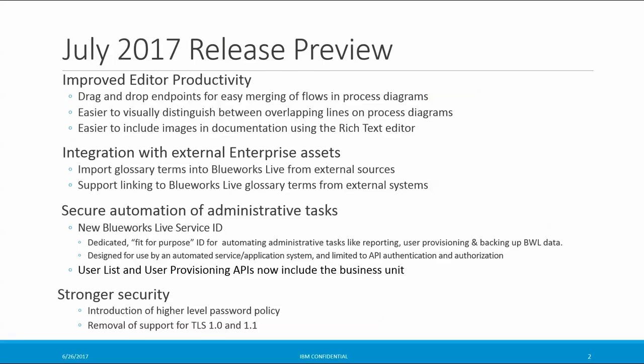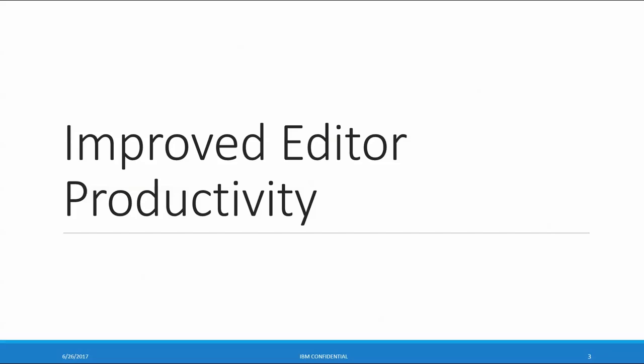In addition, the user list and user provisioning APIs now include business units. And we've strengthened security by both introducing a higher level password policy and removing support for TLS 1.0 and 1.1. So let's take a closer look at these enhancements.